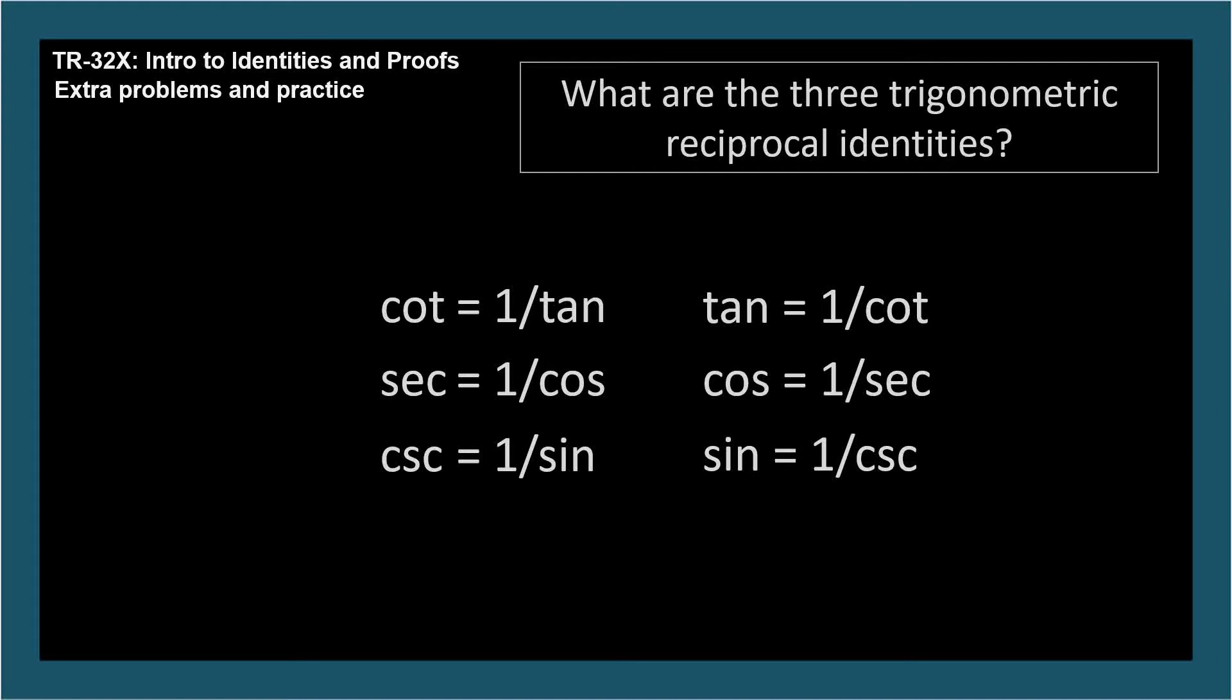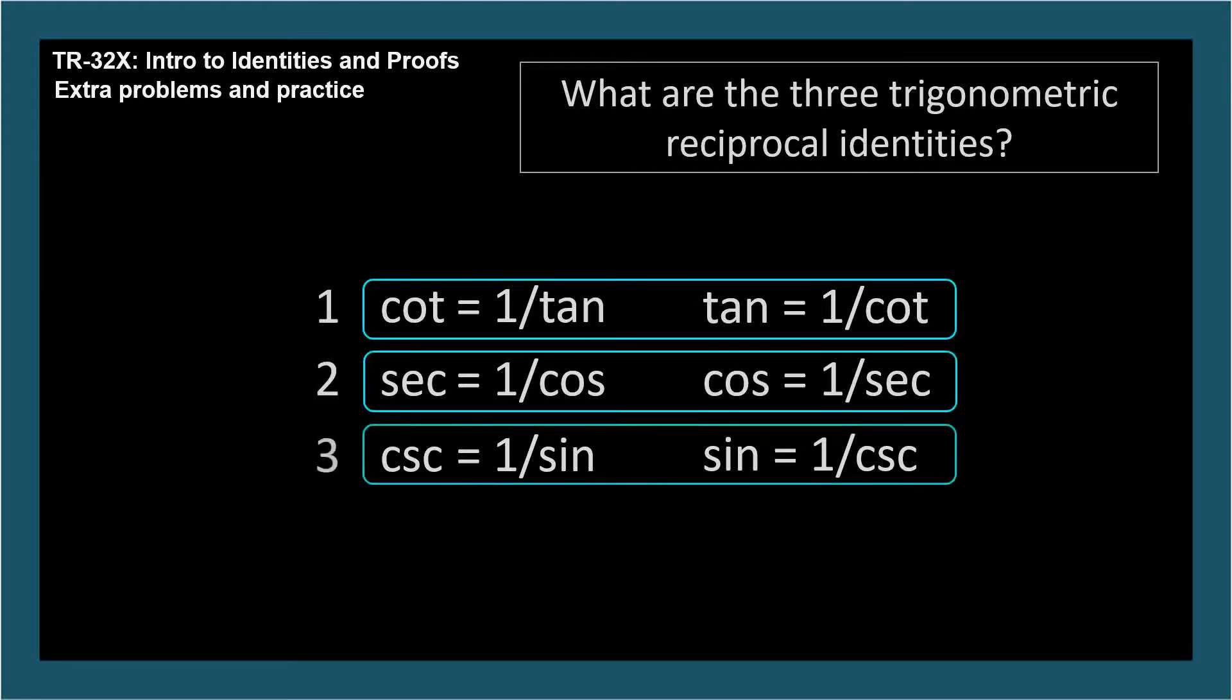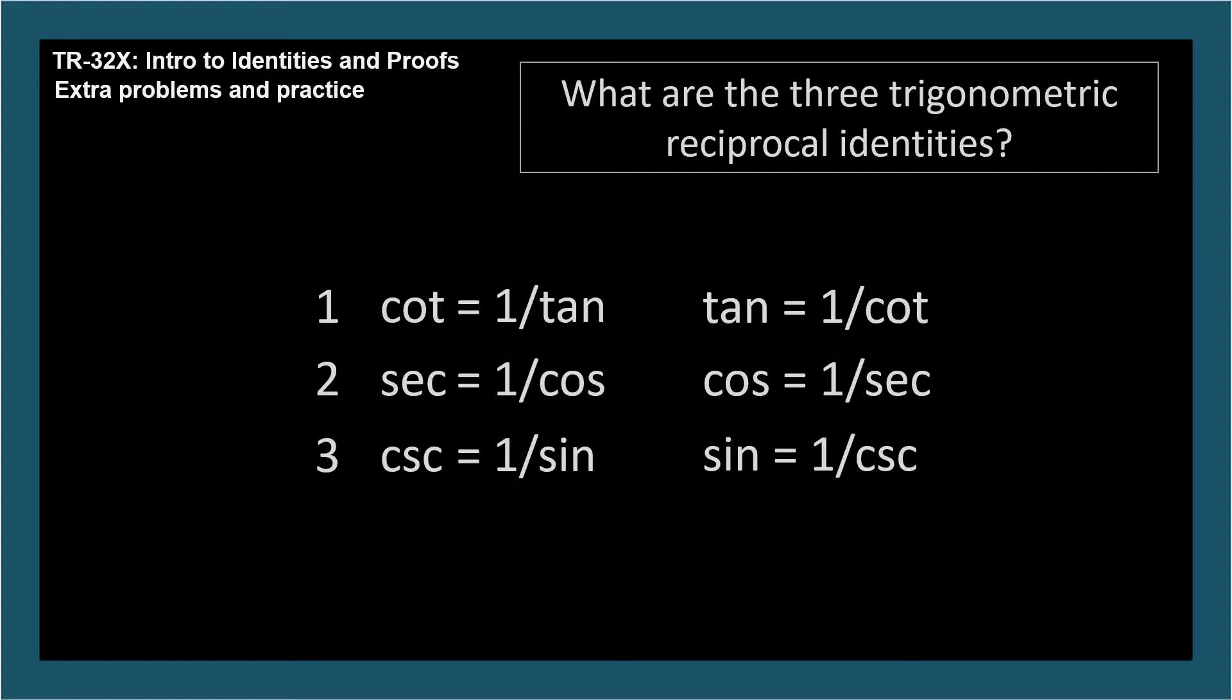You can count these as three identities, or six, I guess. They're so easy I just count them as three. But there are six sets of substitutions. For each of these identities, and all future identities we'll learn, you can always substitute one side of the identity for the other in an equation or proof, like we'll do in the last problem of this video.